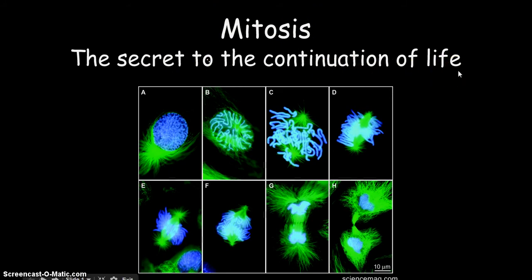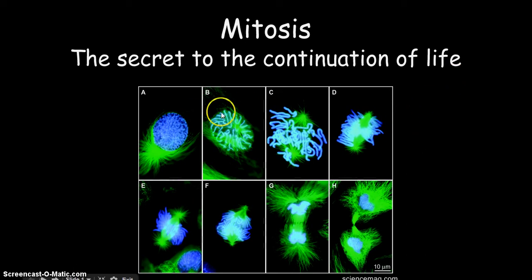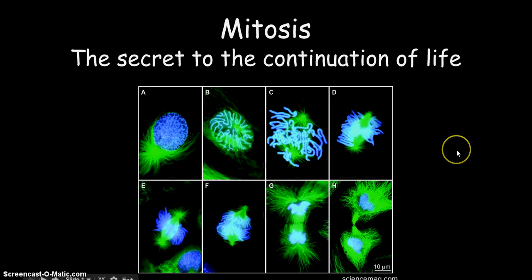Of course, all cells come from all other cells, or at least the cells that came before them. And that's been going on since the onset of life on Earth, and it will keep going on as long as life is here. Here's a pretty cool set of images that actually show a cell dividing. We'll talk a little bit more about that later.